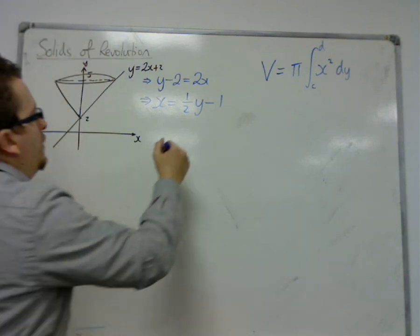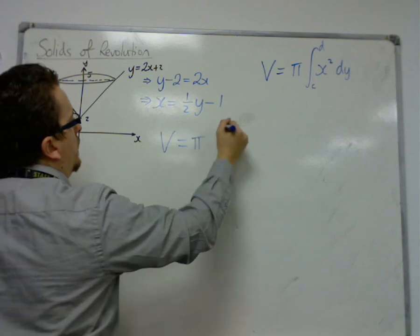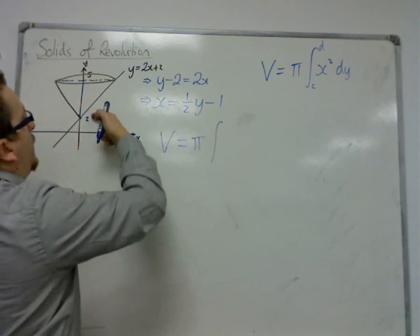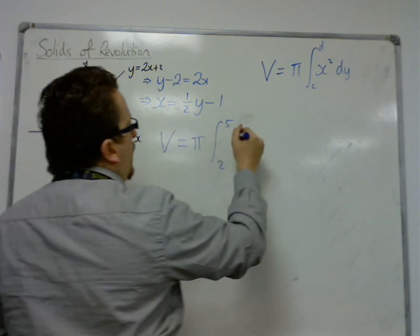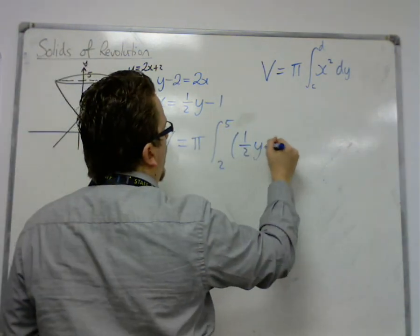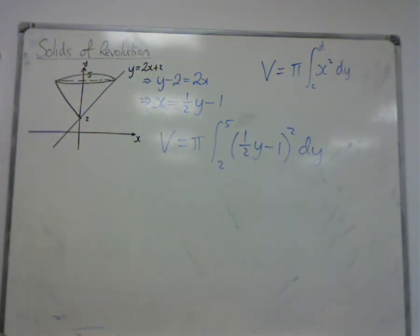So the volume for our little problem is pi times the integral between 2 and 5 of x squared. So that's 1 half y minus 1 squared dy. So this will get us our volume.